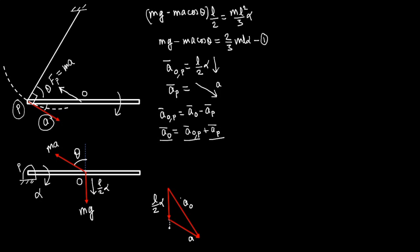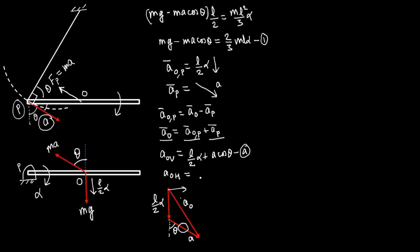This angle will be theta. Breaking the acceleration of the center of mass into horizontal and vertical components: the vertically downward component a_OV equals l/2 · α plus the vertical component of a, which is a·cosθ — note this as Equation (a). The horizontal component a_OH equals a·sinθ — note this as Equation (b). So we now have three equations: Equation 1, Equation (a), and Equation (b).